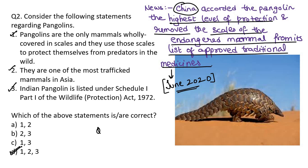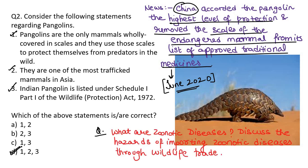What kind of question can come in mains? What are zoonotic diseases? This question can also come in prelims. Discuss the hazards of importing zoonotic diseases through wildlife trade. The IUCN status of this animal in India is endangered — you have to remember this for prelims.